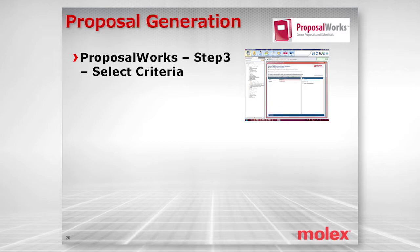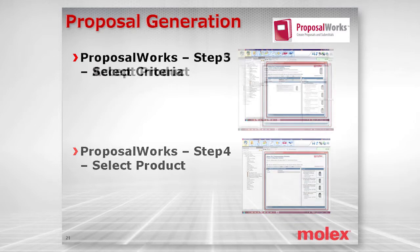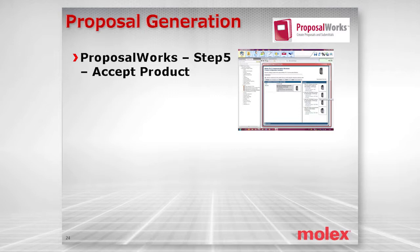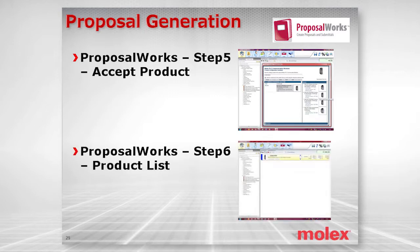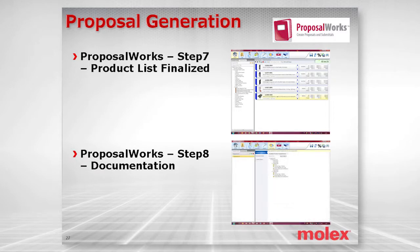Your selection criteria involves selecting products by opening the directory that lists all available products. There is a simple selection process — a product is not included in your proposal until you actually accept it. Once finalized, you can select the documentation you want to include, such as user manuals, data sheets, and price sheets, or minimize it to suit your proposal needs.